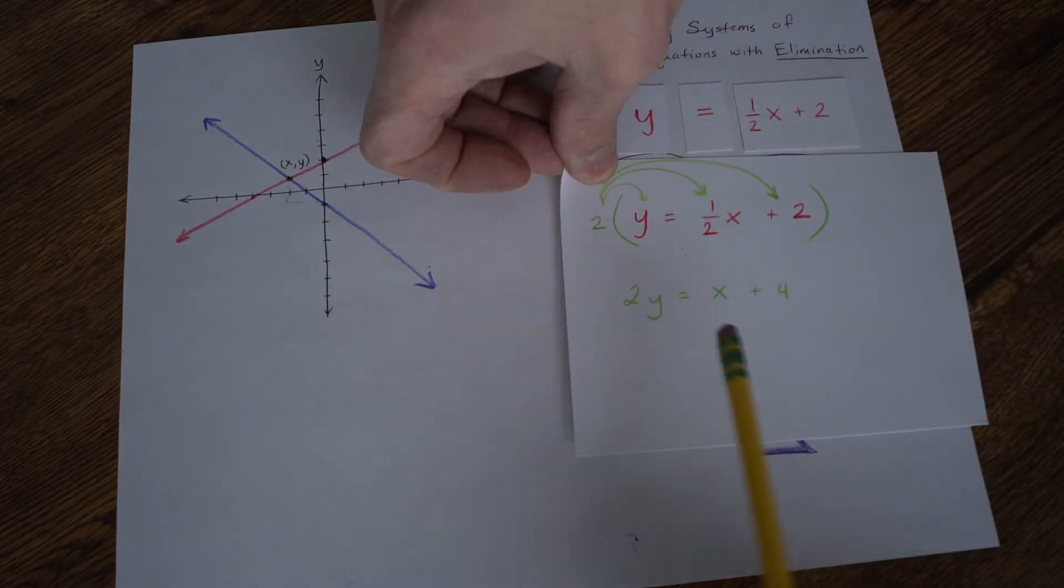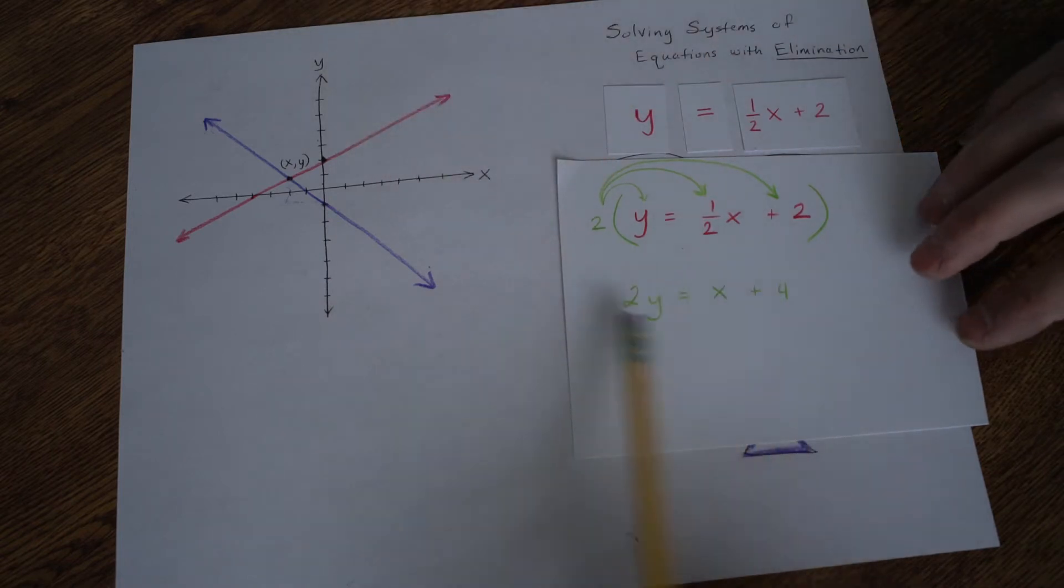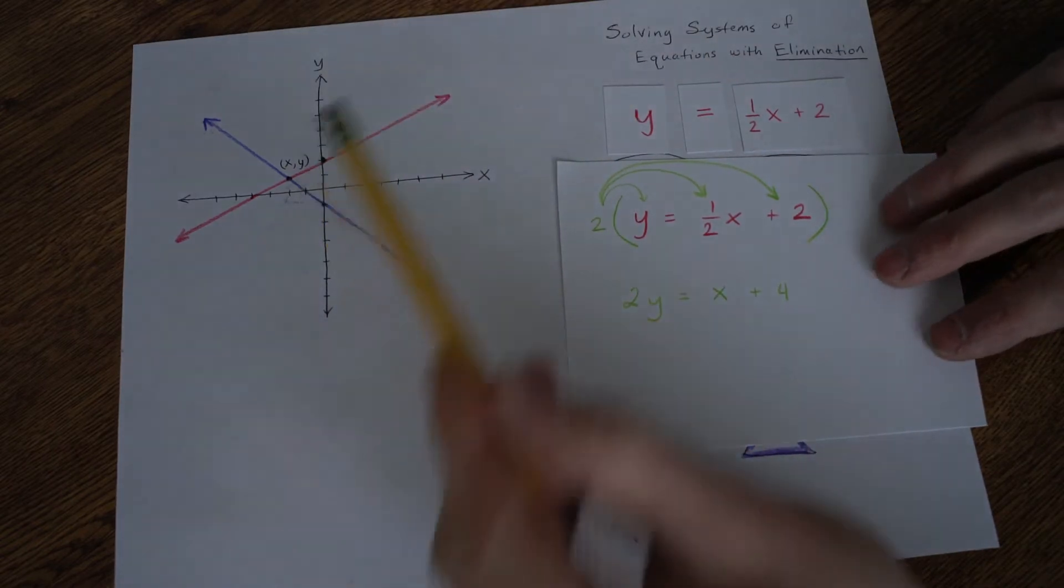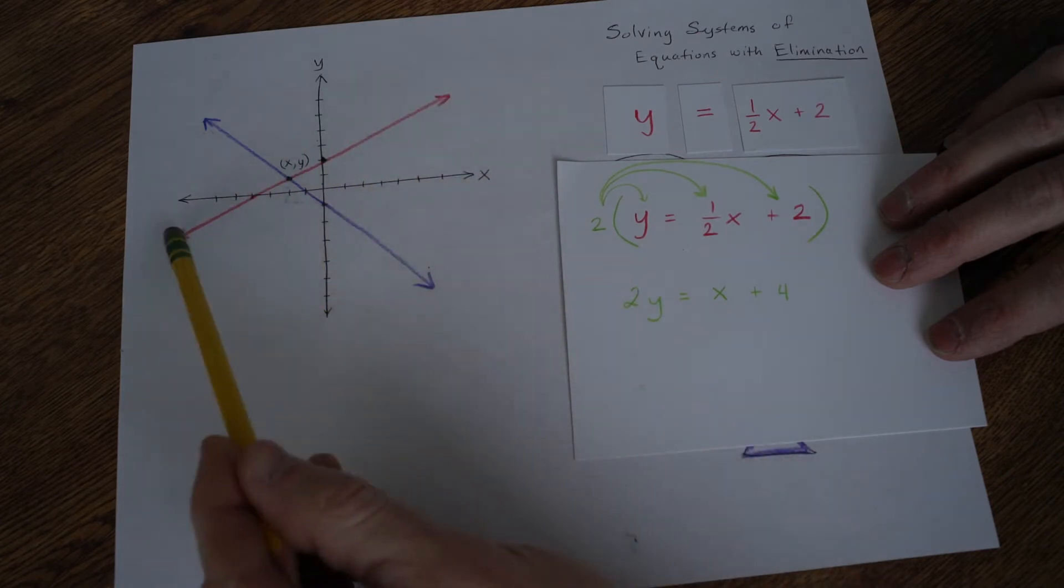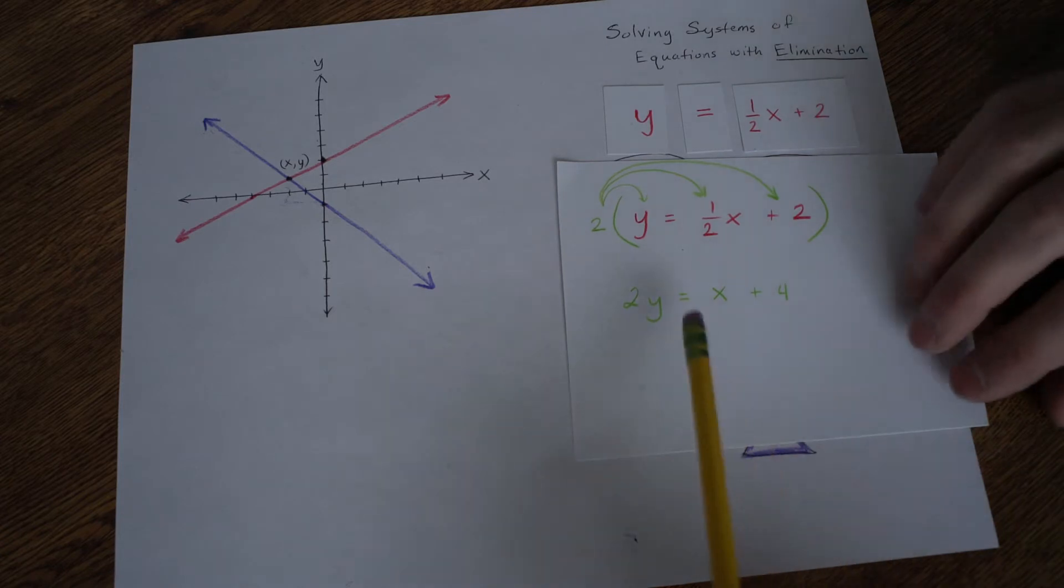And you may think to yourself, well, isn't this a different line? Well, if I graph this line, it would lie exactly on top of the red line. It's an equivalent line. So doubling everything doesn't change the actual line. It just changes the form of the equation to an equivalent equation.